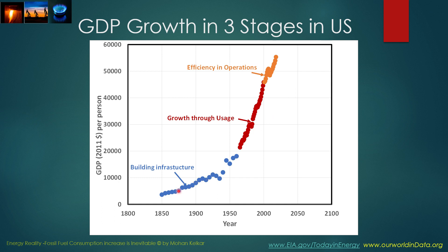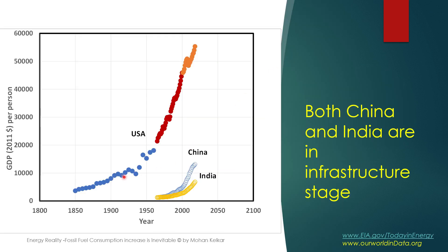So this is the GDP growth in those three stages in the United States. You can see that the slope of the line during the infrastructure period is relatively small, then during the growth period — without any increasing fossil fuel consumption — that rate is very high, and then the rate slows down a bit during the efficiency period. If you compare the United States with China or India in terms of how GDP is growing, you can clearly see that both China and India are in that infrastructure building period, where the GDP is growing but the slope indicates it is during the stage of infrastructure.